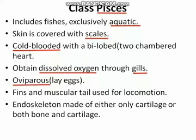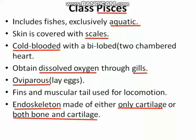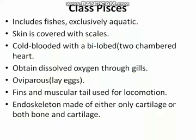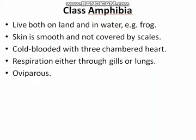These are oviparous, meaning they lay eggs. They have fins and a muscular tail which they use for locomotion — moving from one place to another. Regarding their endoskeleton, some fishes have an endoskeleton made up of only cartilage and are called cartilaginous fishes, while others have an endoskeleton made up of both bones and cartilage and are commonly called bony fishes.